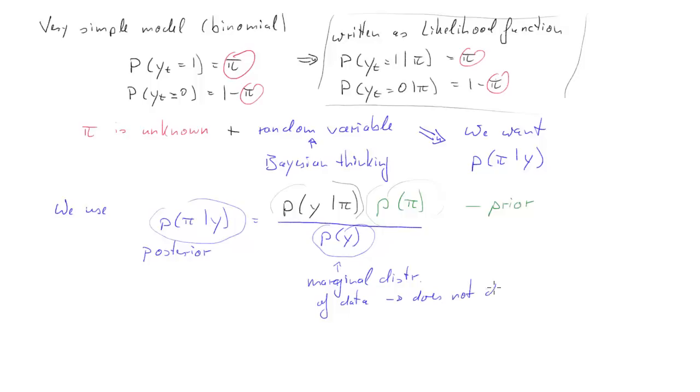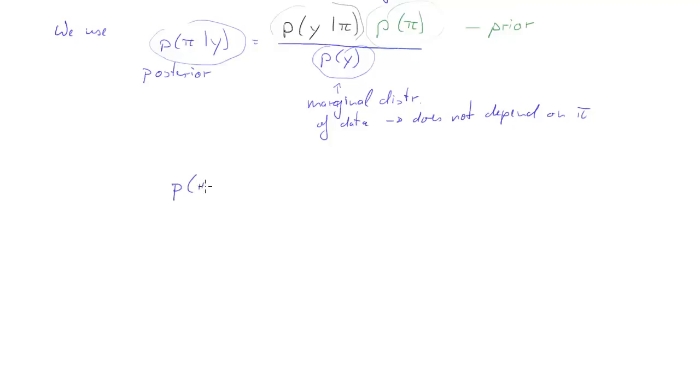As this distribution does not depend on the parameter we're interested in, on pi, we will actually somewhat ignore it for this purpose. So we will write down the posterior distribution is proportional to the likelihood times the prior. So when we calculate that, we're not actually getting the posterior. We're getting something different because we've ignored the marginal distribution of the data. Therefore I call that PP. And eventually it will need some rescaling or standardization such that it's a distribution again, meaning all probabilities sum up to 1.